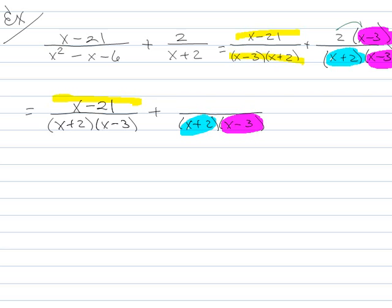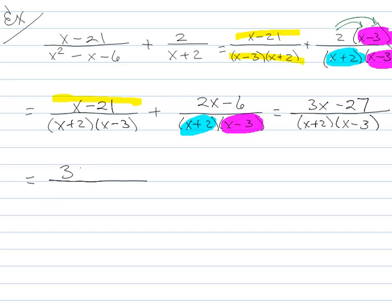To save a little bit of time, I'm going to go ahead and distribute the 2 to get 2x minus 6. Now I can add these together. I get x plus 2 times x minus 3 on the bottom. On the top, I've got x plus 2x is 3x minus 21 minus 6 is minus 27. We always have to make sure that we can't simplify what we have any more than we already have. In this case, I see that I can pull out a 3. If I pull out a 3, I get an x minus 9. And then, I'll have an x plus 2 and an x minus 3 on the bottom.